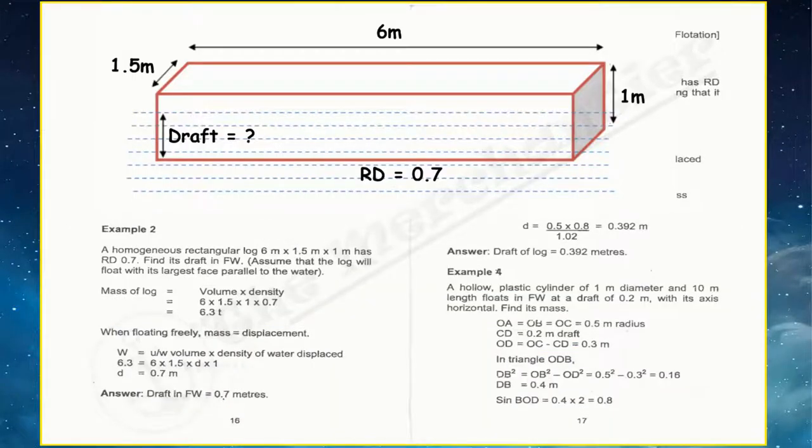Now coming to example number two, which is example first ke tarah hai. Isme rectangular log diya hua hai jiska length width 6 meter, 1.5 meter hai aur jiska jo height hai that is 1 meter hai. This case mein humein draft find karna hai fresh water mein. Aur ye jo log hai wo relative density 0.7 mein hai. Sabse pehle humein iska mass nikal lenge. To mass kaise nikal lenge? Mass of log equals volume into density. So volume humein pata hi hai, density we can easily see here that is 0.7. To humein iska mass nikal lenge that is 6.3 ton. Humein pehle result mein dekha tha jab koi bhi cheez freely move karti hai to uska jo mass hota hai wo displacement ke equal ho jata hai. So mass equal to displacement. Aur ab humein yahan pe formula put kar denge. So with the help of this formula we can easily find draft in fresh water. So draft in fresh water is 0.7 meter.